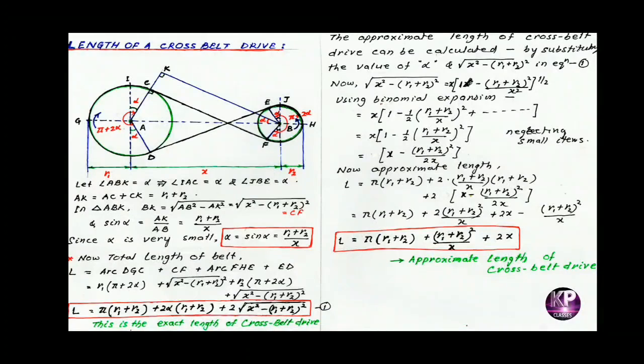The belt leaves the driver at points C and D, and the belt leaves the follower at points E and F. GH is the horizontal line which passes through the centers of both pulleys.